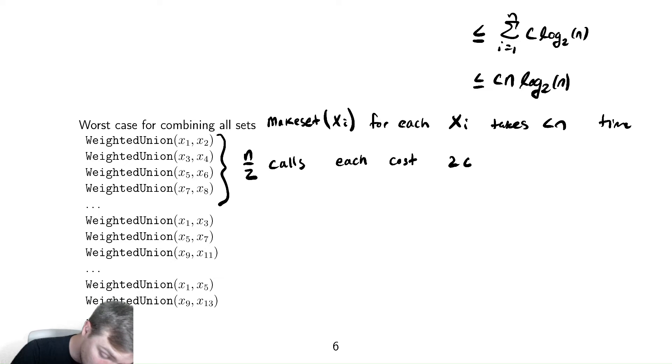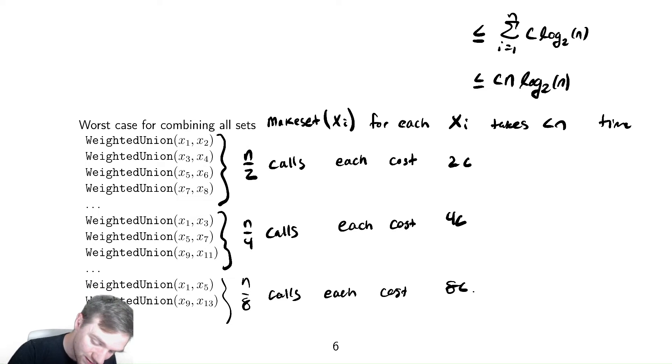By similar reasoning, we're going to make n over four calls, and they each cost 4c. Similarly, we're going to make n over eight calls, and they each cost 8c. And we'd repeat this. This is kind of convenient. This has a total cost of n, and n, and n.